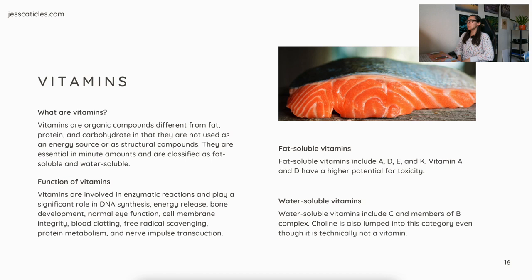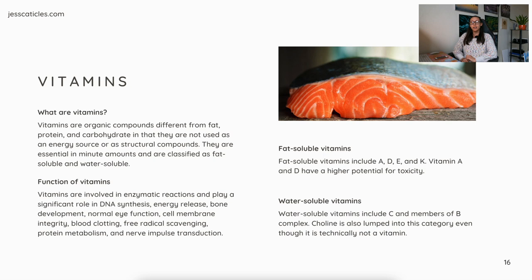What are vitamins? Vitamins are organic compounds different from fat, protein, and carbohydrate in that they are not used as an energy source or as structural components. They are essential in minute amounts and are classified as fat-soluble and water-soluble. Vitamins are involved in enzymatic reactions and play a significant role in DNA synthesis, energy release, bone development, normal eye function, cell membrane integrity, blood clotting, free radical scavenging, protein metabolism, and nerve impulse transmission. Fat-soluble vitamins include A, D, E, and K — vitamins A and D have the most potential for toxicity. Water-soluble vitamins include C and members of the B complex; choline is also lumped into this category even though it's technically not a vitamin.